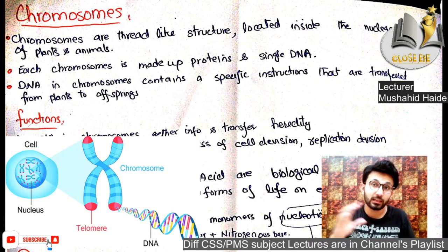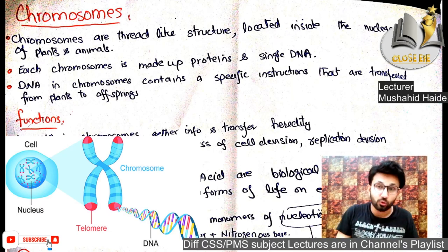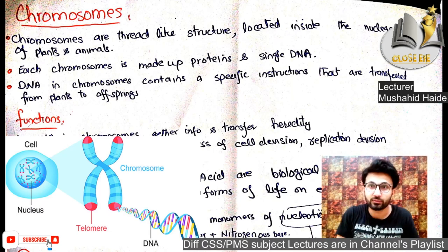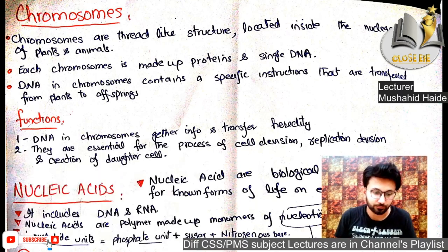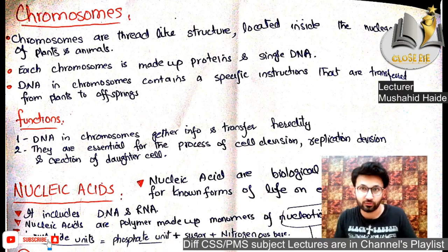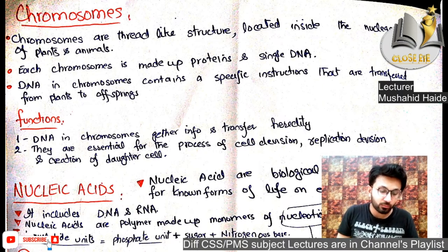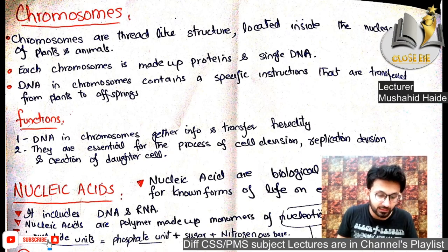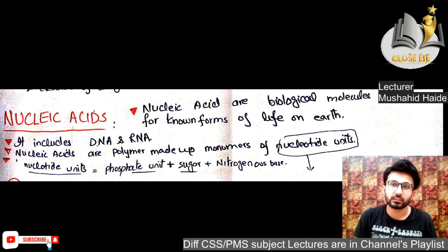Chromosomes are thread-like structures made of proteins and DNA. They transfer properties from parents to children. Chromosomes are located inside the nucleus of plants and animals, and each chromosome is made of proteins and a single DNA molecule. DNA in chromosomes contains specific information transferred from plants to offspring. Functions: chromosomes gather and transfer hereditary information, and they are essential for cell division, replication, and creation of daughter cells.